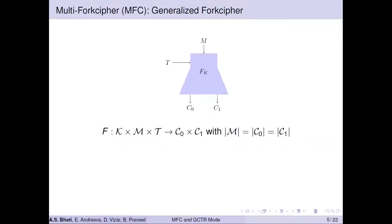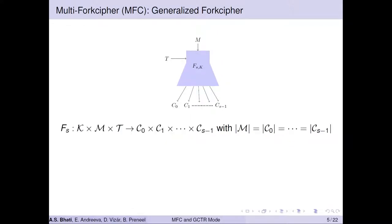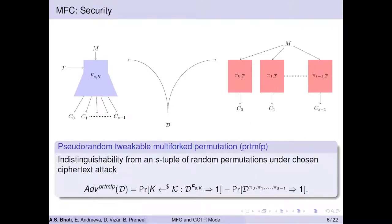A multi-fork cipher can be seen as a generalization of fork cipher in terms of the number of outputs. Instead of returning two output blocks, a multi-fork cipher will return S many output blocks, where S is an external parameter that corresponds to the number of branches. Similarly, the security of a multi-fork cipher is defined by its indistinguishability from an S-tuple of random permutations under the chosen ciphertext attack, dubbed as PRDMFP.